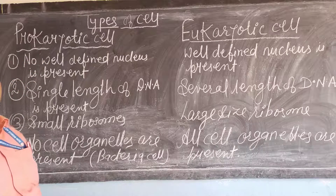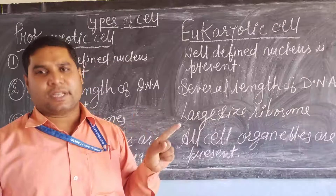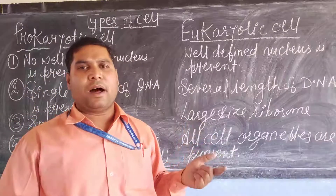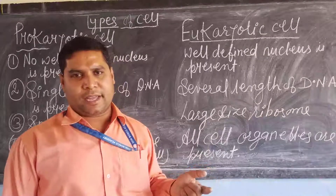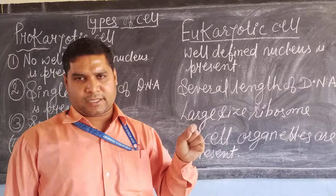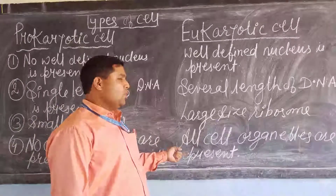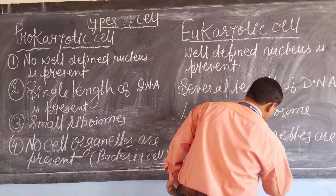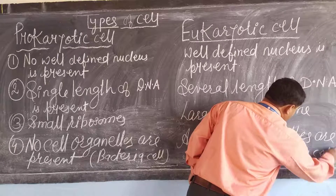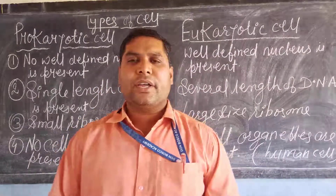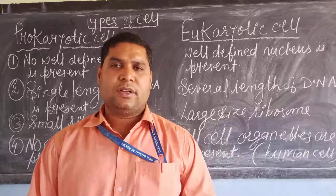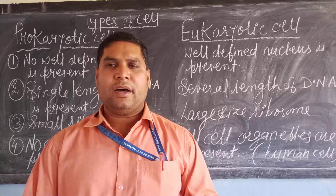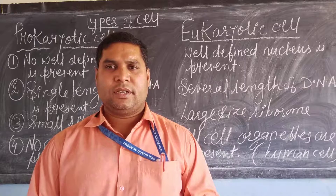Bacterial cells and blue-green algae do not contain a nucleus. Whereas in eukaryotic cells — such as cells of humans, animals, plants, and many microorganisms — a well developed nucleus is present. Those which have a well developed nucleus are known as eukaryotic cells. For example, human cells, animal cells, and plant cells. Please read the topic of types of cells and learn the differences between eukaryotic and prokaryotic. Thank you, dear students.